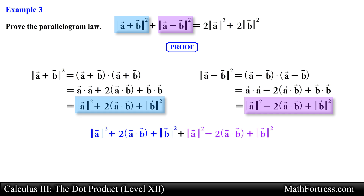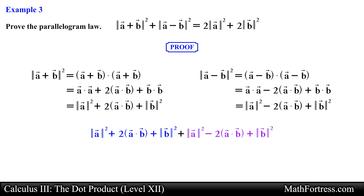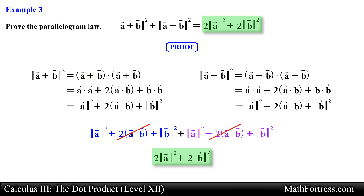Now it is just a matter of substituting these expressions into the left side of the law. Doing that we obtain the following, and then we collect like terms to obtain the right side of the law. And this ends the proof. This also ends the dot product series. In the next series of videos we will focus on the third way of multiplying vectors, called the cross product.